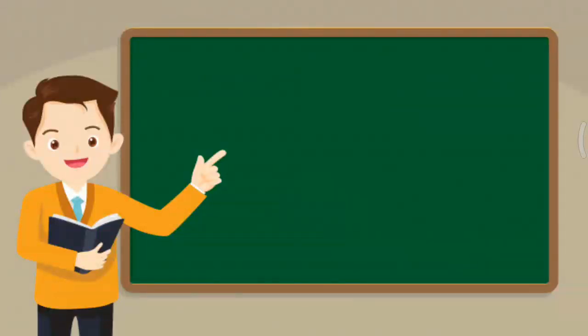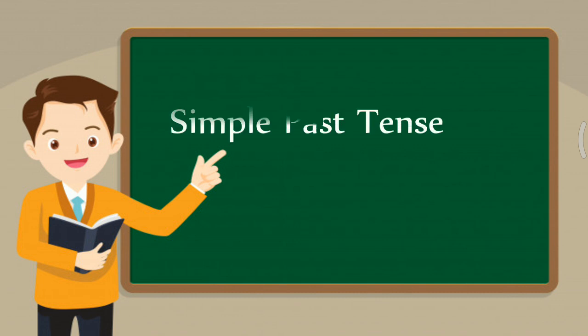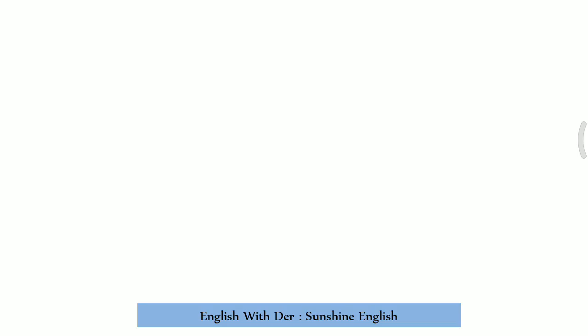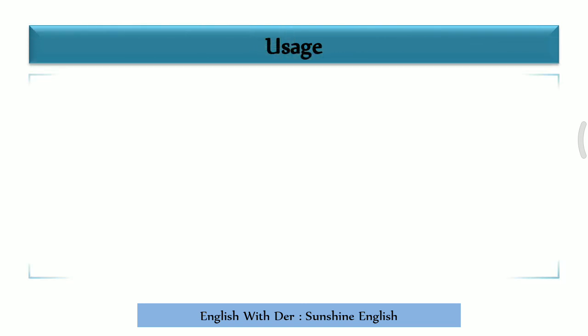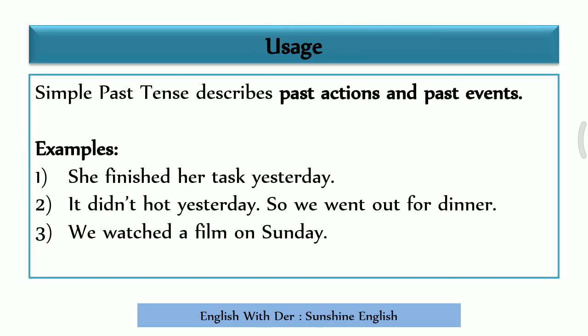Hello friends, welcome to this YouTube channel. In the series of tenses, I am Paras Deir, the faculty of English. In today's video we are going to talk about simple past tense. Simple past tense is used to describe past actions and past events — if we want to talk about past events or any actions, we use this tense.